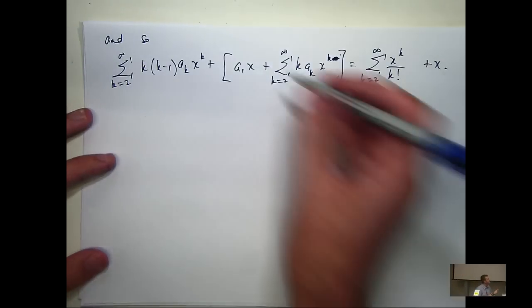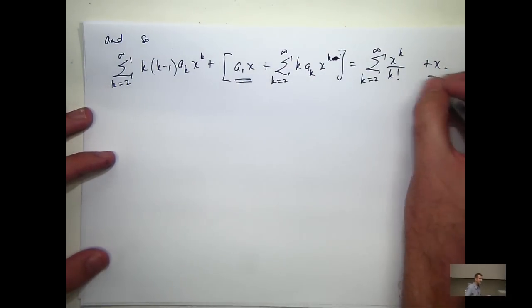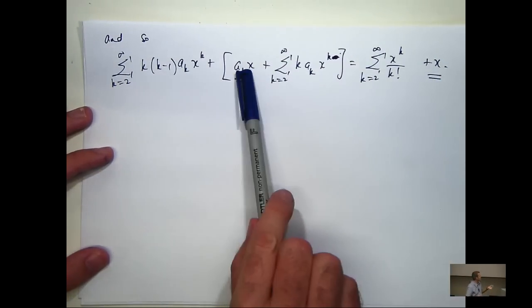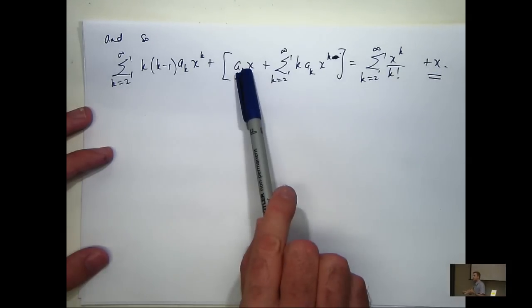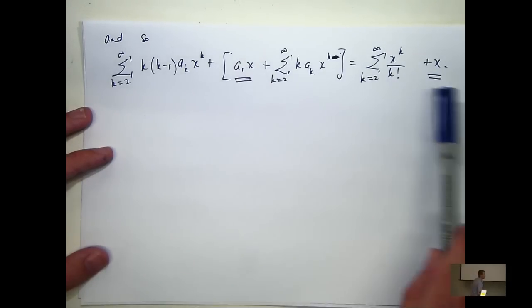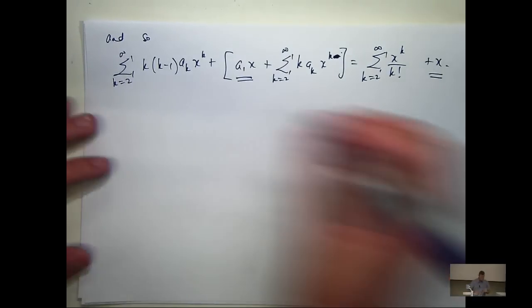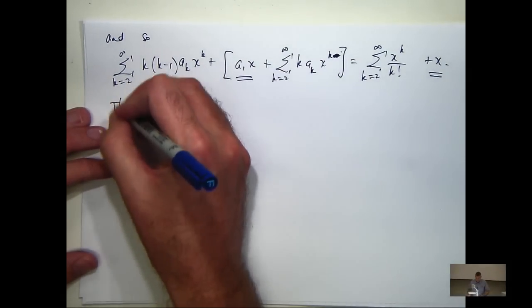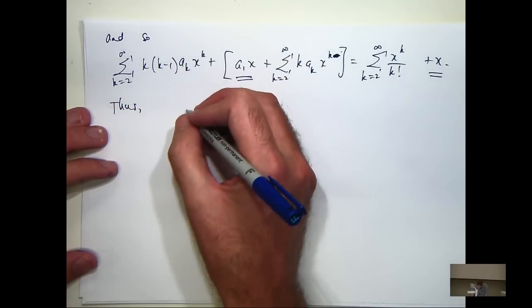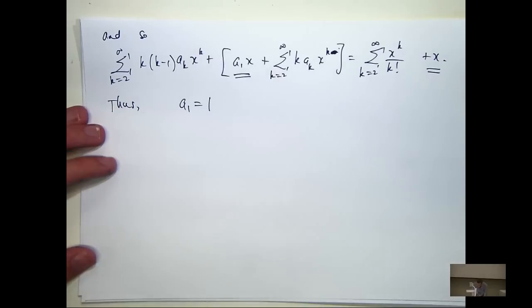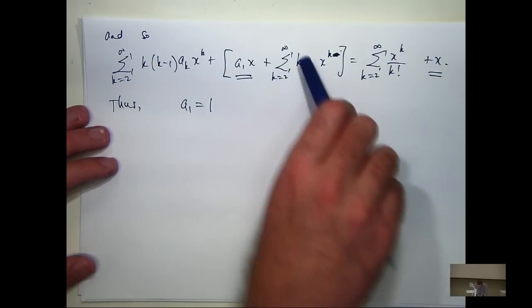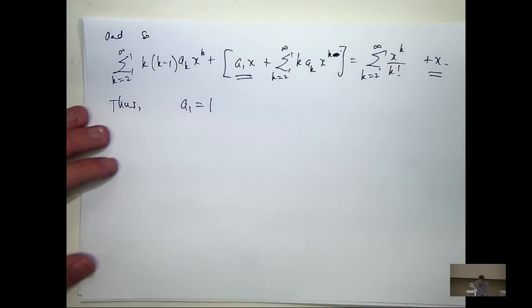All right, so what have I got that's left over? Because I've got equality here, this coefficient has got to equal this one. So what do I know about A1? It's going to be 1. So you're just comparing the coefficients now. Because you have equality, the coefficients on this side have got to equal the coefficients on this side.